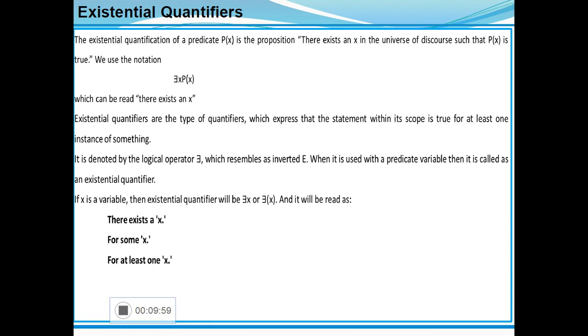Another quantifier used in dependent type programming paradigm is existential quantifier. Predicate P(x) is the proposition which implies there exists an x in the universe of discourse such that P(x) is true. The corresponding mathematical notation is: there exists x, P(x). Existential quantifiers are types of quantifiers which express that the statement within its scope is true for at least one instance of something. It is denoted by the expression 'there exists'. When it is used with a predicate variable, it is called the existential quantifier.